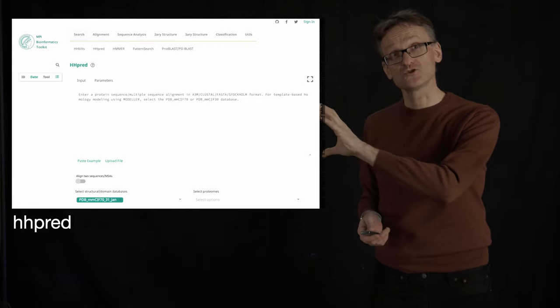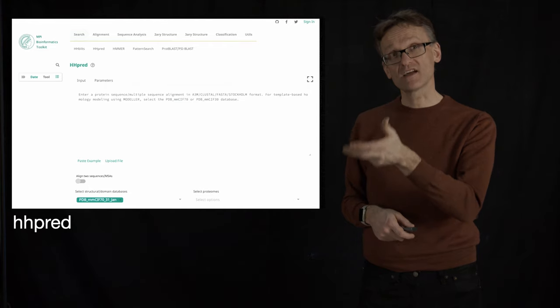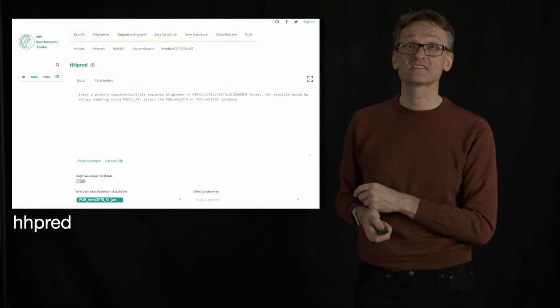You can just paste your sequence in a window, click through, look at the multiple sequence alignment, and then they will gradually take you through step by step until you have a PDB file you can download. It's stellar.